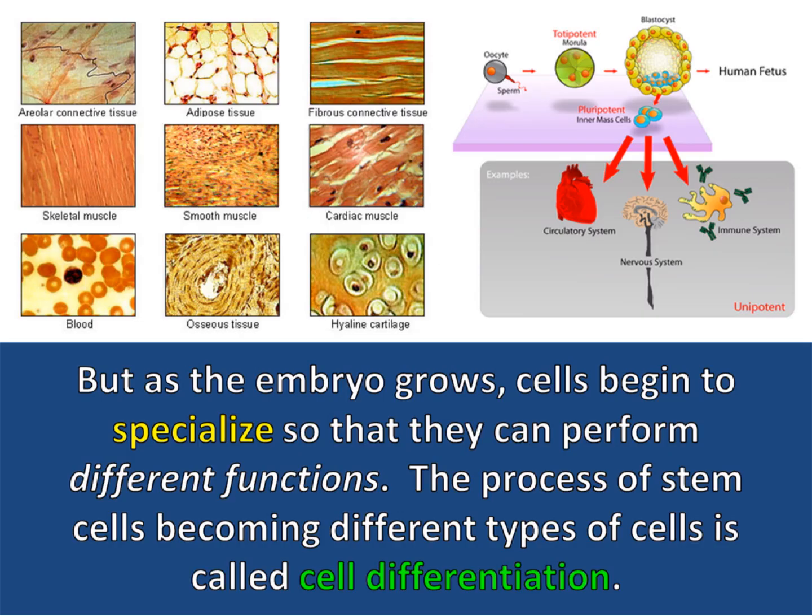But as the embryo grows, cells begin to specialize so that they can perform different functions. The process of stem cells becoming different types of cells is called cell differentiation.